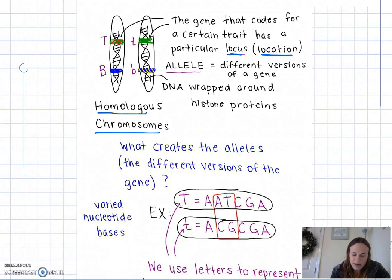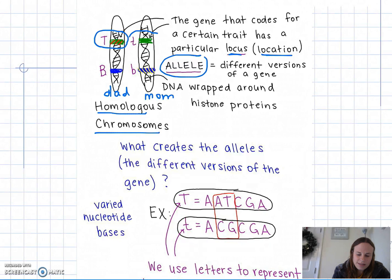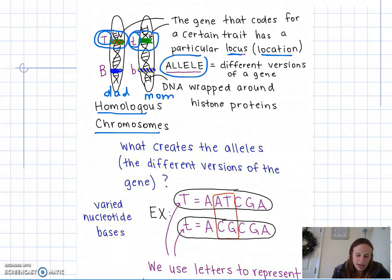Alleles are different versions of that gene. For example, if I got this chromosome from dad and this chromosome from mom, the gene that codes for height is located at the same place on both of those chromosomes. However, the alleles might be different — maybe I got the tall allele from dad but the short allele from mom.